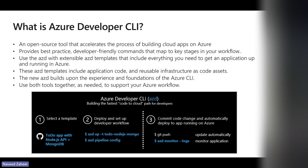Azure Developer CLI is built on top of the foundation of Azure CLI. Bicep is great if you are deploying infrastructure resources, but when it comes to code you have to go through a DevOps pipeline. What the Developer CLI does is glue Bicep — or your infrastructure-as-code tool, which can be Terraform as well — together with the ability to deploy code, so in a single shot you can deploy your Azure resources and your code.